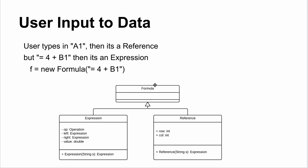Our class inheritance diagram has a Formula base class with two subclasses: Expression and Reference. An Expression has an operation, left-hand side, and right-hand side; a Reference just has row and column for another cell. The issue is: when I call 'new Formula(string)', I want it to create either an Expression or a Reference depending on the string passed — but how do I implement that?